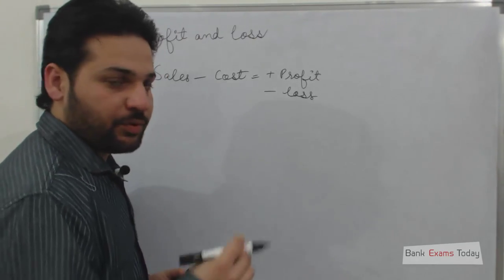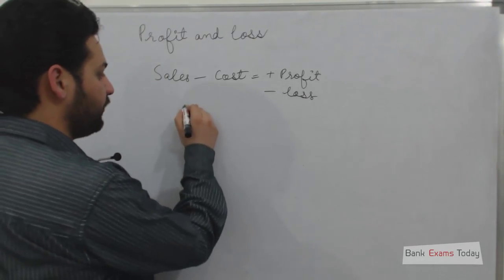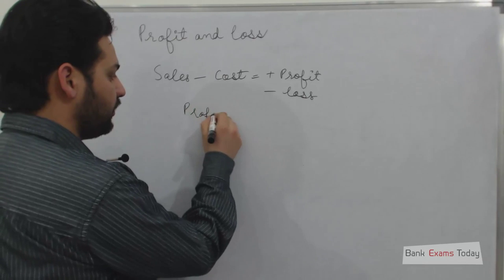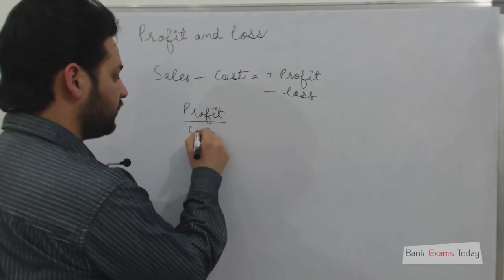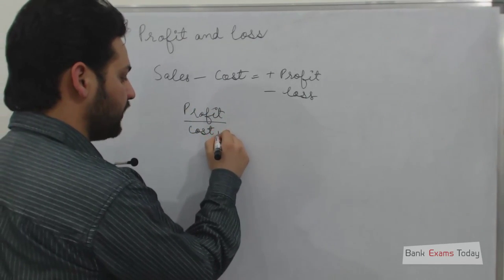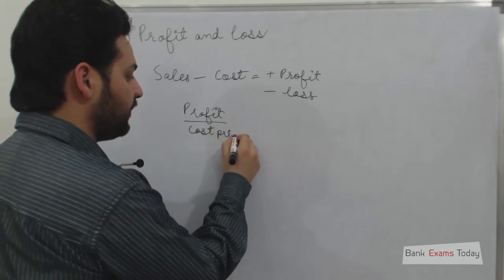In case we need to calculate the profit percentage, simply profit divided by cost price multiplied by 100.